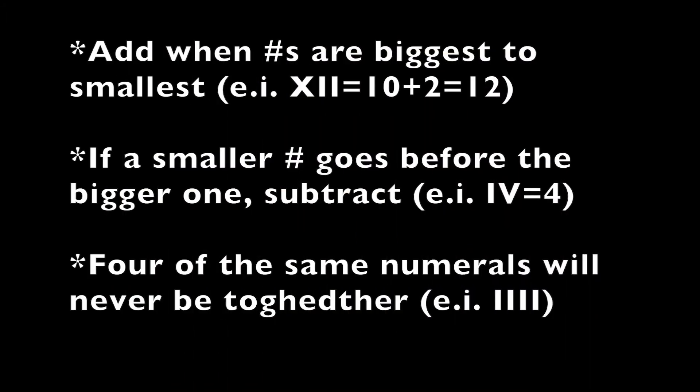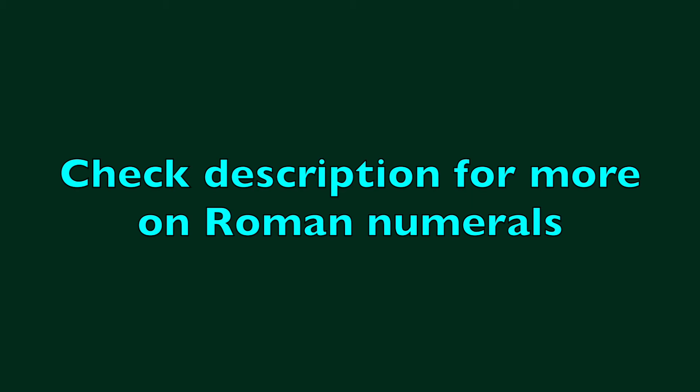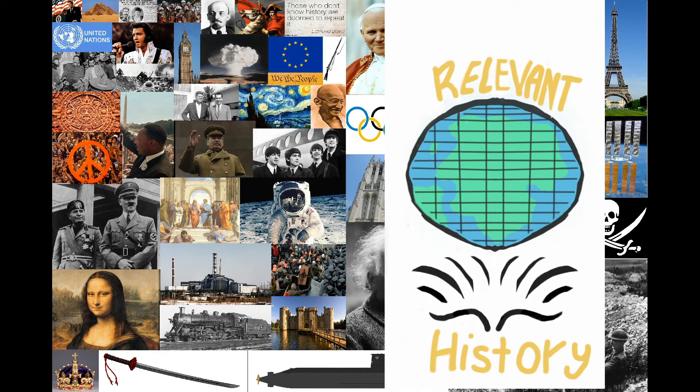Most of the time, Roman numerals appear in order from biggest to smallest — which means you add them, as shown in the example here. However, sometimes a smaller numeral appears before a larger one; in that case, like Roman numeral four (IV), you subtract. This leads to my third point: you will never see four of the same Roman numeral consecutively. That's why four is not written as four I's, but as a I followed by a V. There's more to Roman numerals, but I only wanted you to know the basics — and honestly, I'm running out of time.